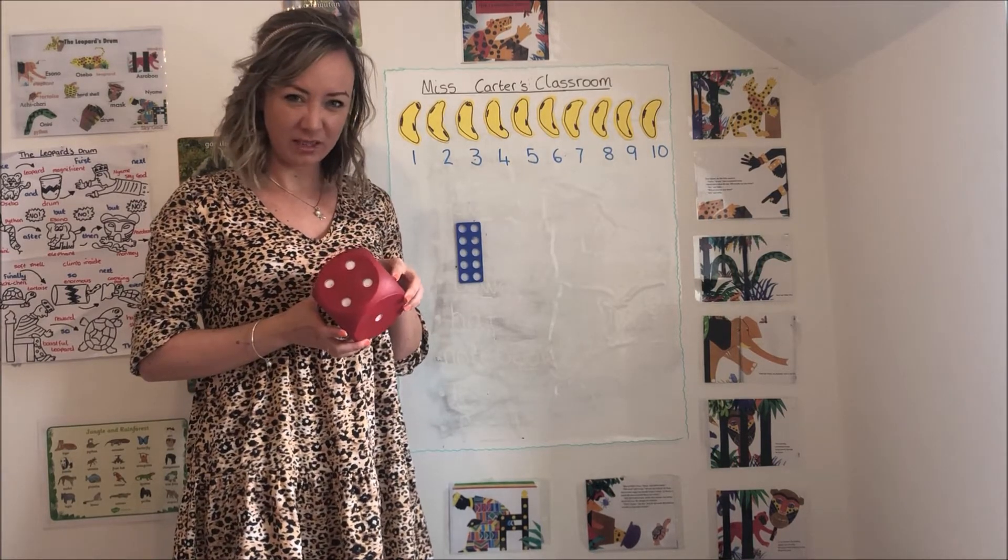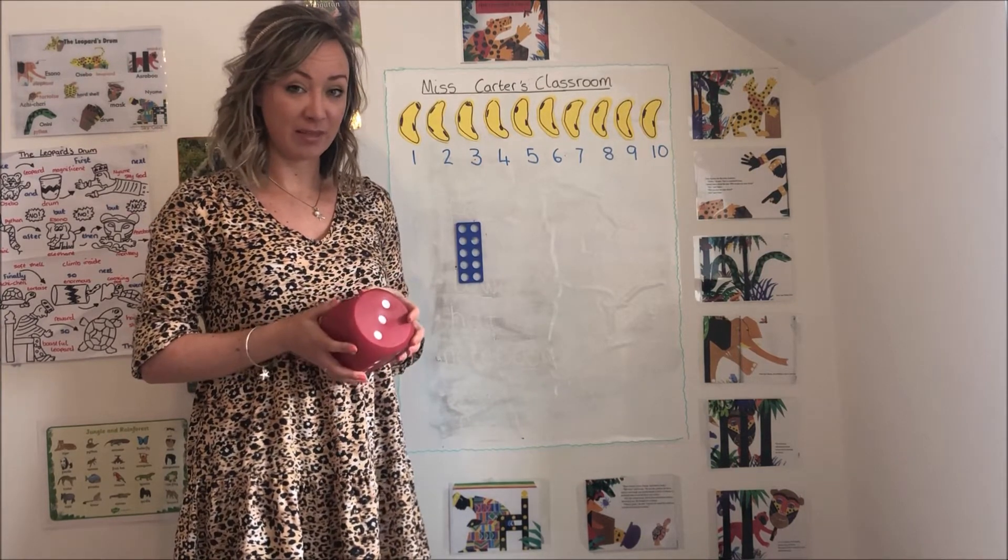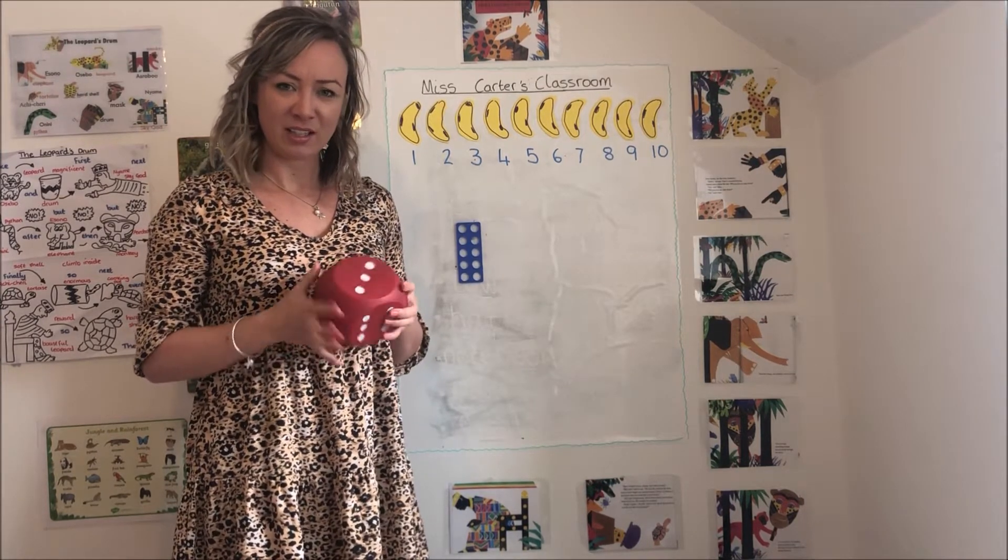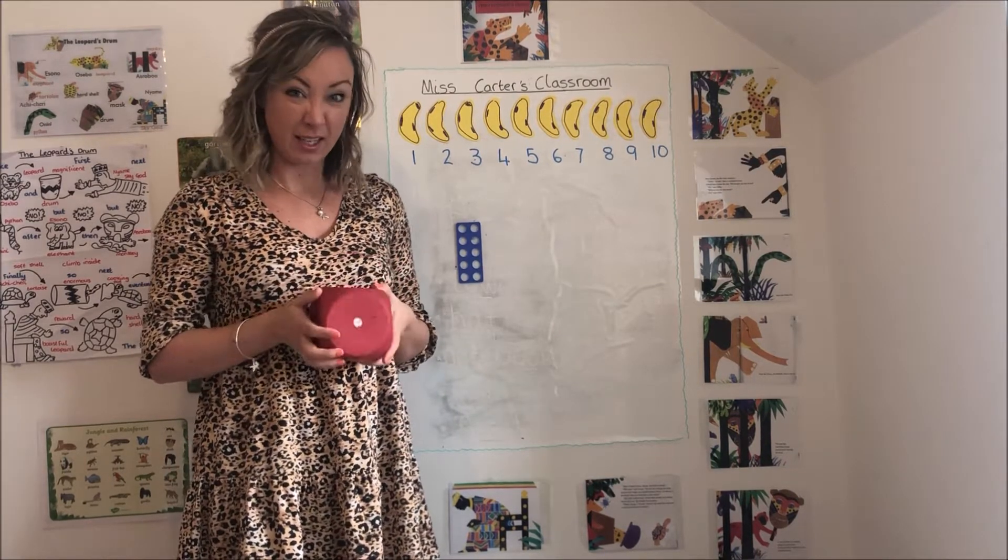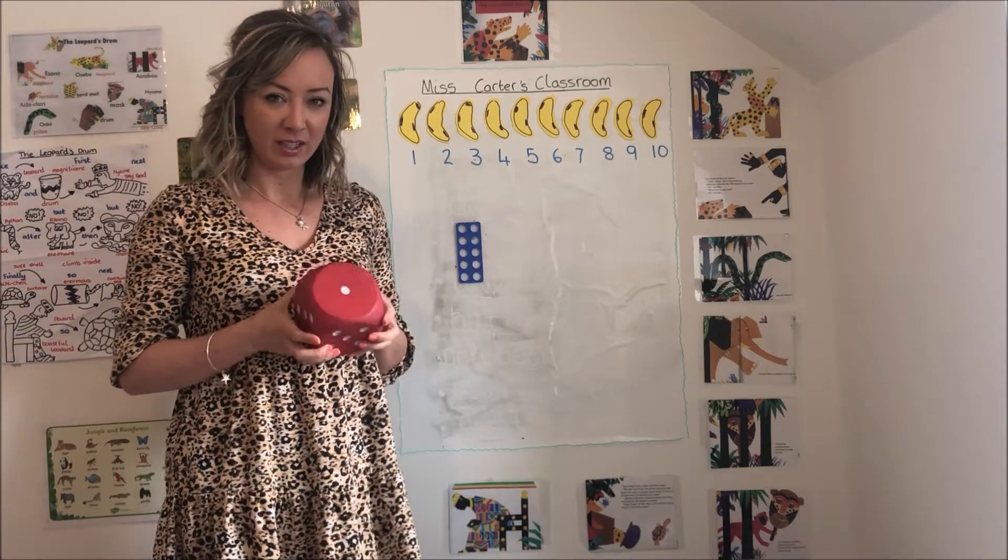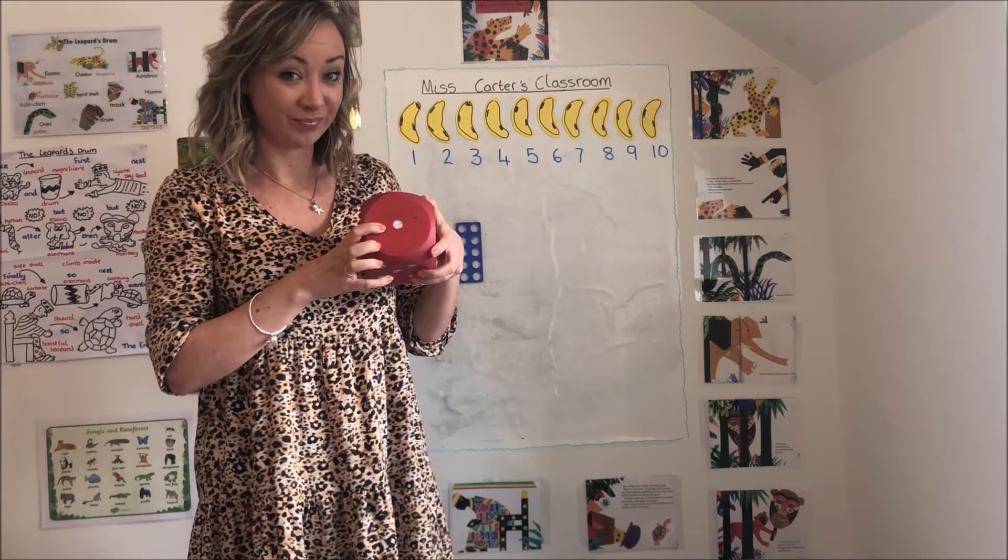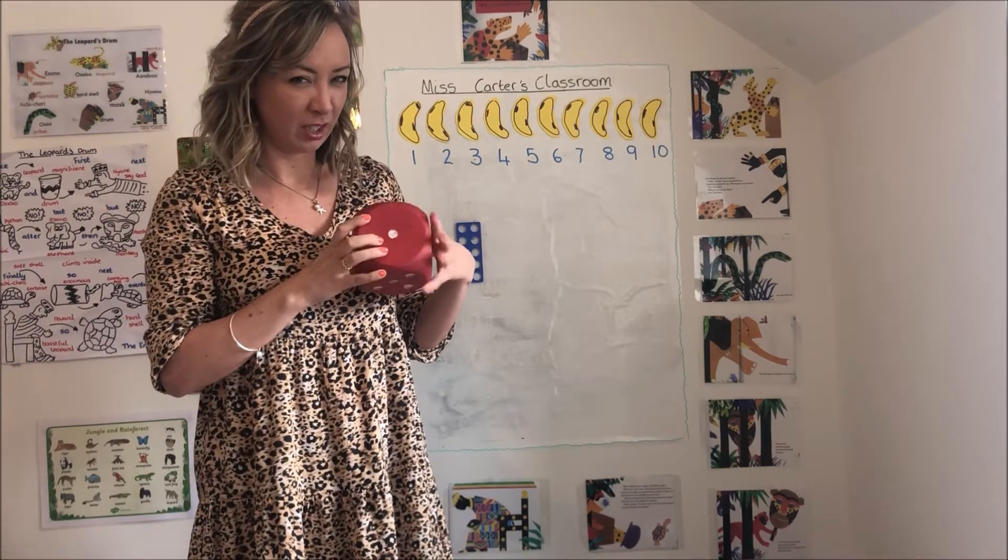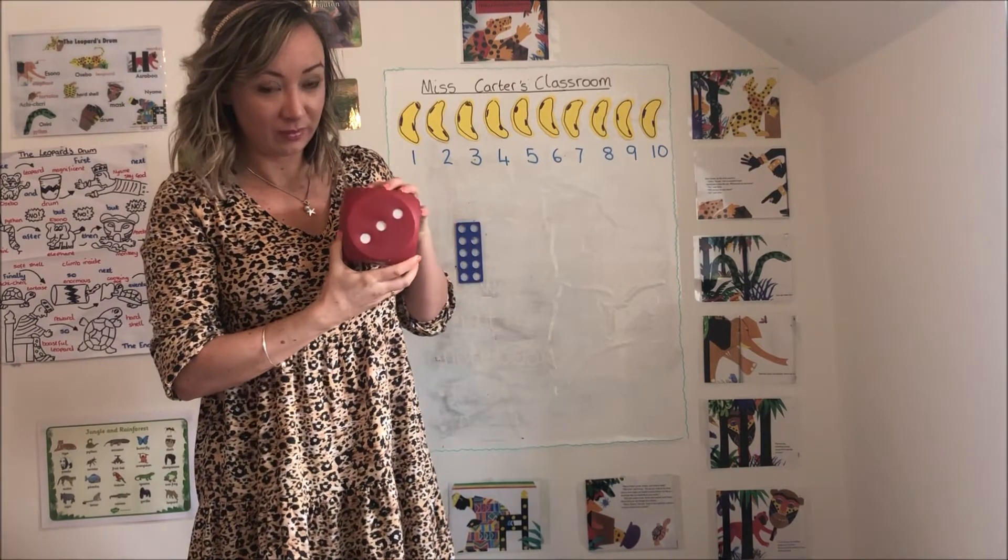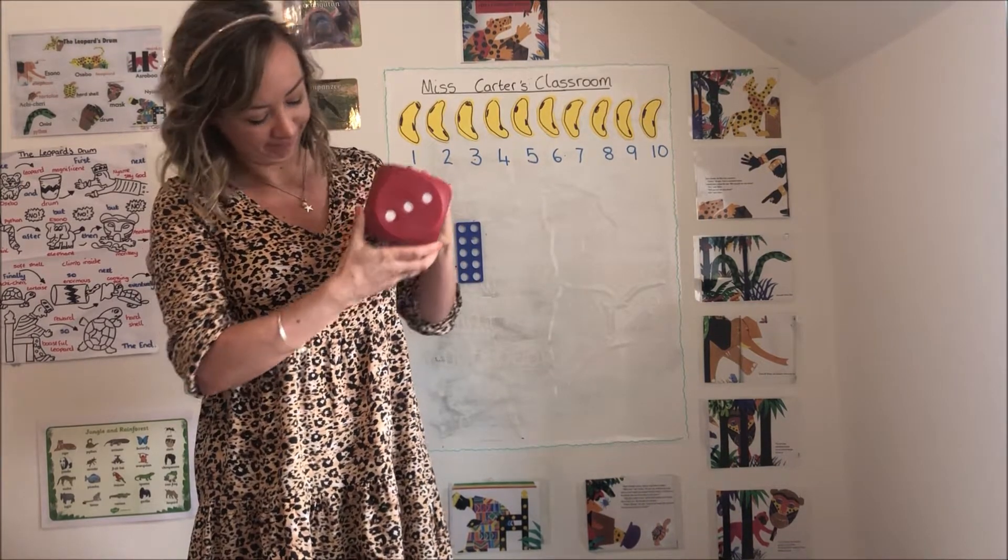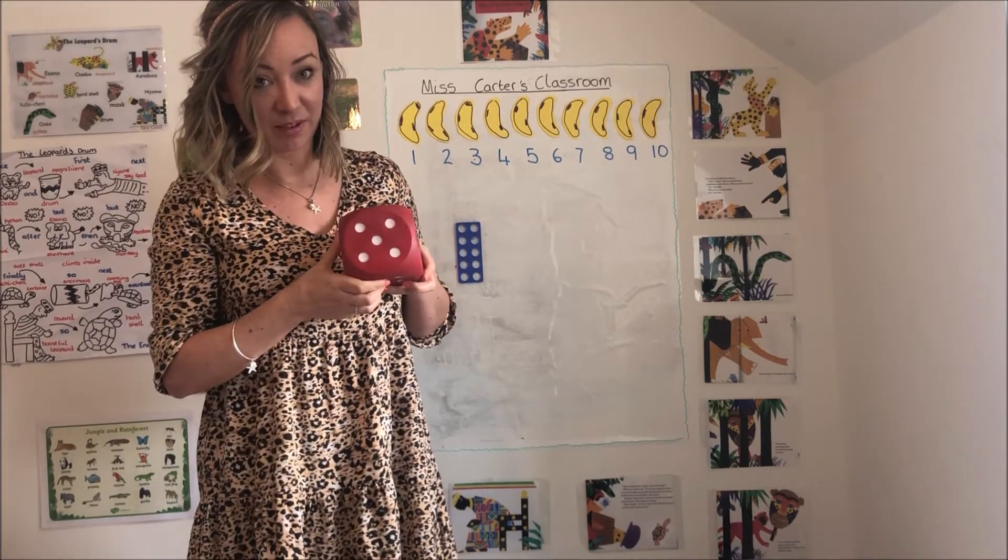Have you seen one of these before? You might have done in school or even if you've been playing some games with your family at home. On the die are some spots and they tell you what number they are. So I wonder if you can have a look and see what number you think that might be. That's right, it's number one. What's that one then? That's number two. Number three. Number four. Number five.